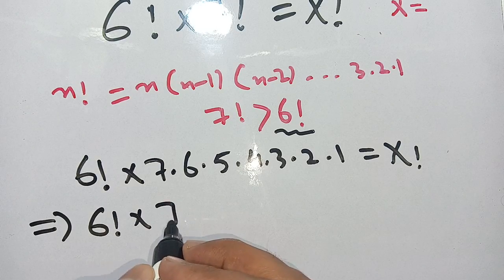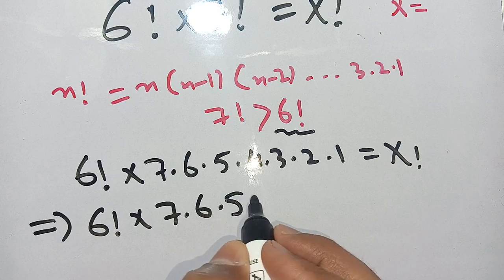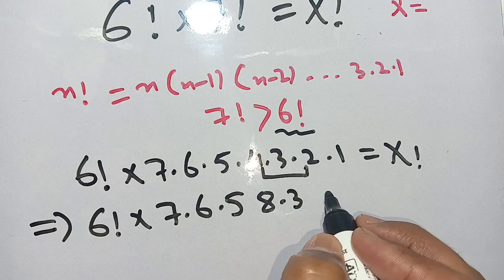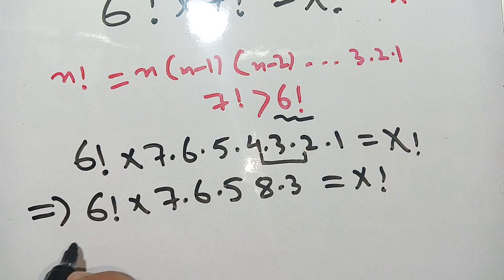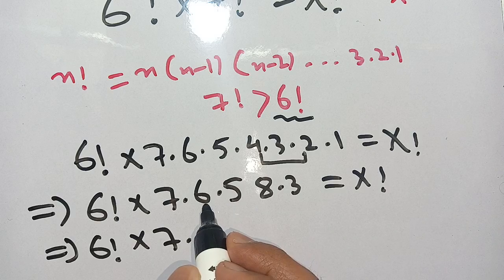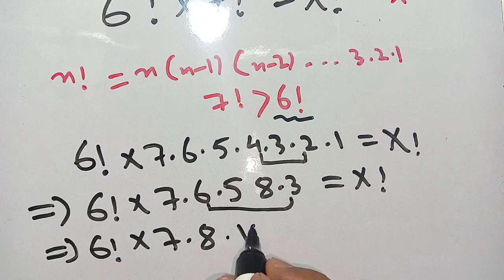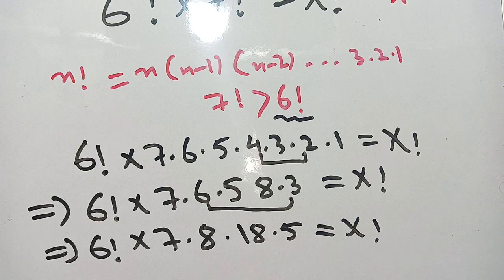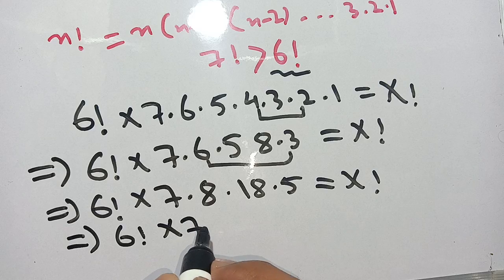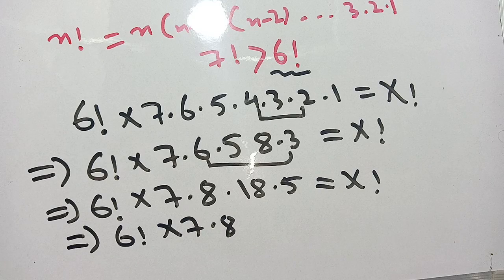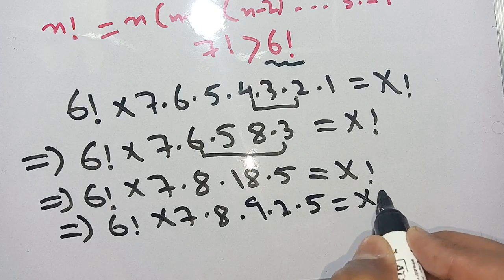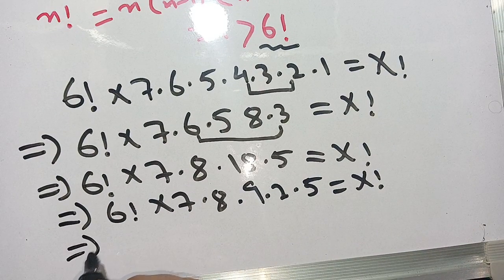In the next step, we write this as 6 factorial times 7 times 6 times 5, and when we multiply 4 times 2 it becomes 8, and 3 times 1 becomes 3, equal to x factorial. We can write this as 6 factorial times 7 times 8 times 9 times 2 times 5, equal to x factorial.